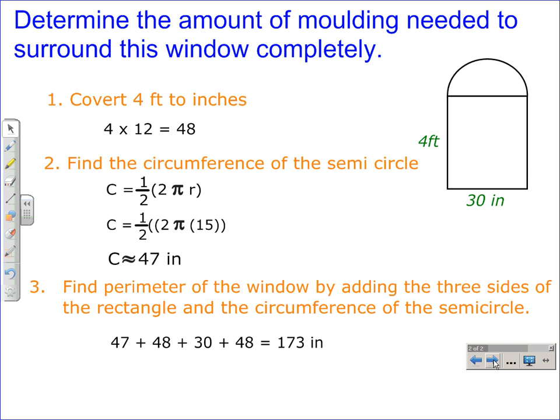Now the title of this lesson was to find the perimeter of an irregular shaped object. This is an irregular shaped object because it's not a simple object. It's a combination of two objects. We have a rectangle here and we have a semi-circle on top of the rectangle. So that would be a pretty neat looking window.